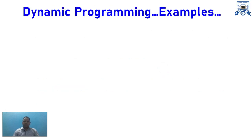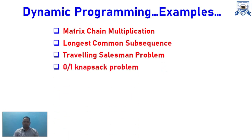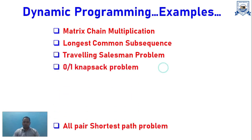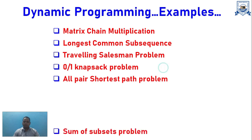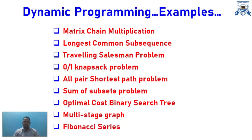Examples of Dynamic Programming include: Matrix Chain Multiplication, Longest Common Subsequence, Traveling Salesman Problem, 0/1 Knapsack Problem, All Pairs Shortest Path, Sum of Subset, Optimal Cost Binary Search Tree, Multi-stage Graph, and Fibonacci Series.